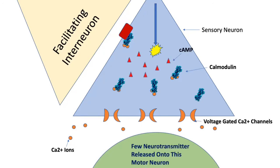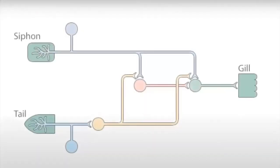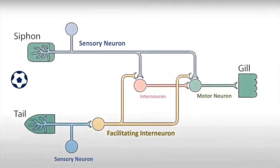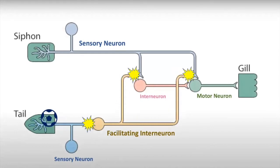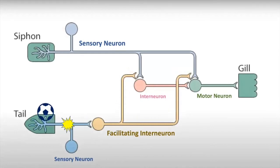Few neurotransmitters are then released. Now let's see what happens when a ball is dropped on its tail, producing a pain signal that sends a shock signal from the facilitating interneuron to the sensory neuron.